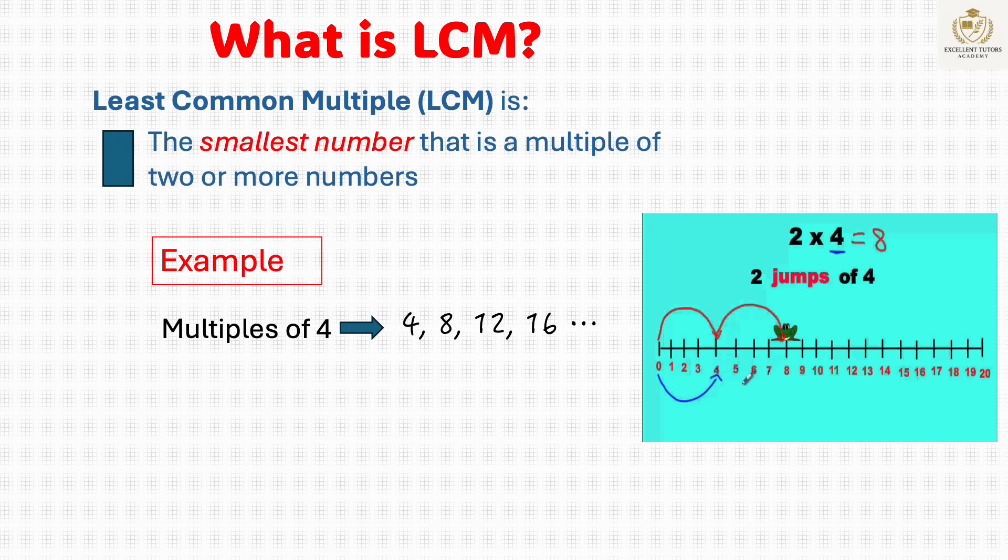For example, the multiples of 4 are 4, 8, 12, 16, and so on. And the multiples of 6 are 6, 12, 18, 24, and so on.